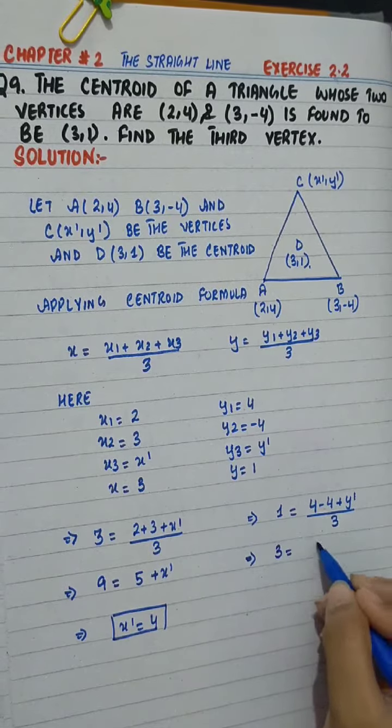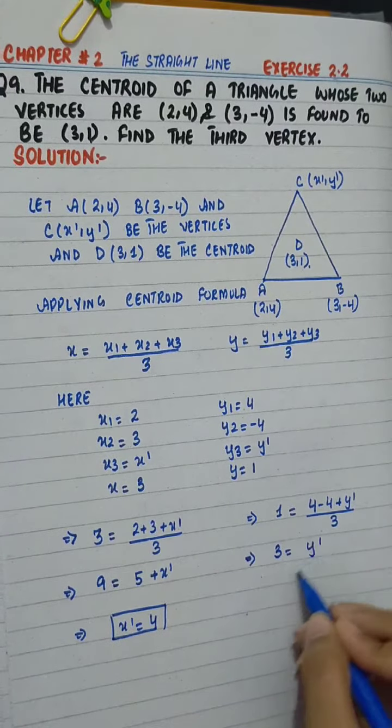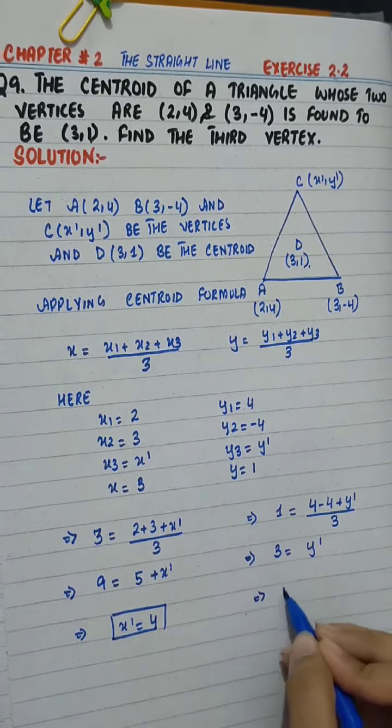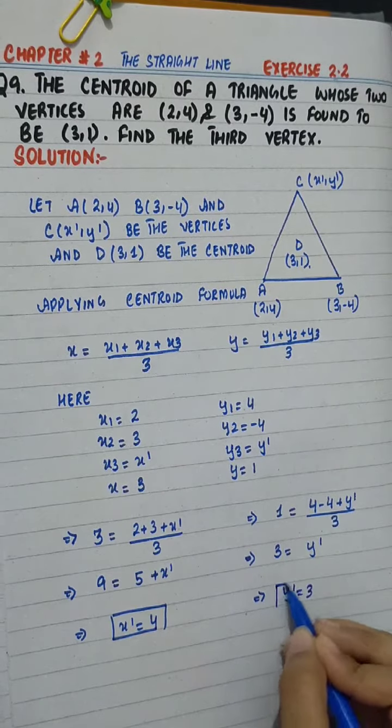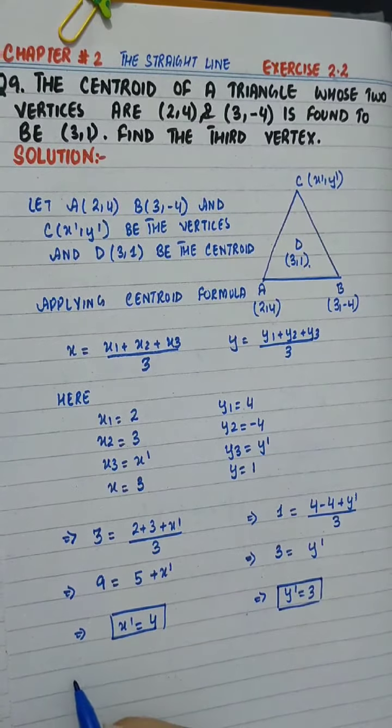Cross multiplying here: 4 - 4 is 0, so y' equals 3.